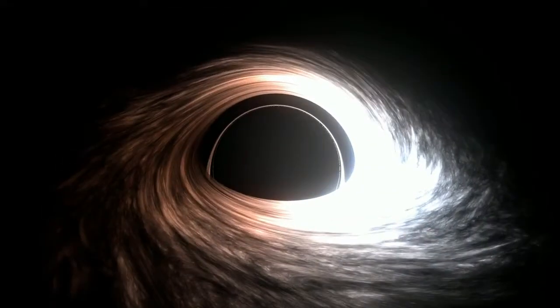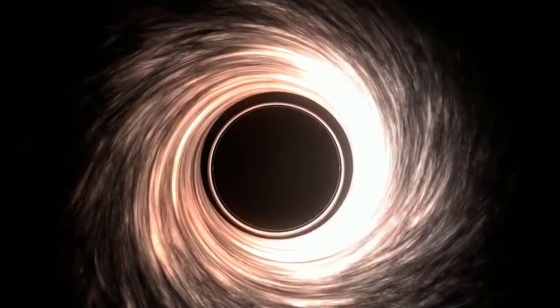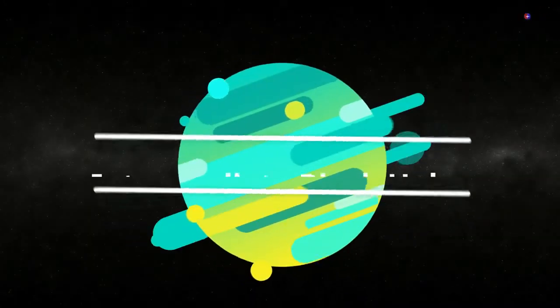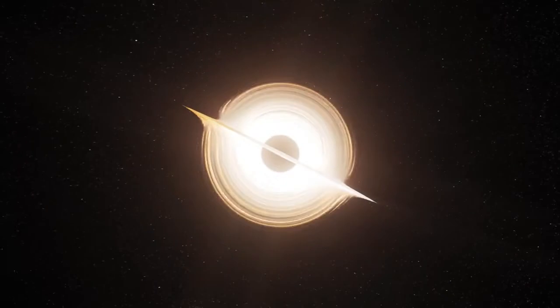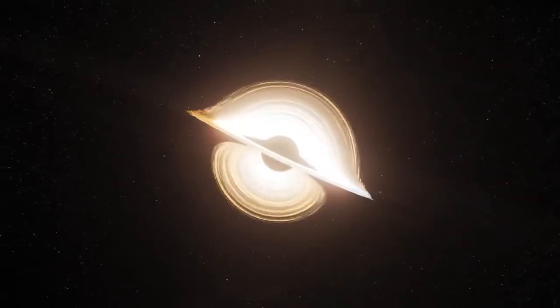In the mass range between stellar mass and supermassive black holes, i.e. hundreds to hundreds of thousands of solar masses, are intermediate-mass black holes. This type of black hole is not too small or not too big, but it's rare.